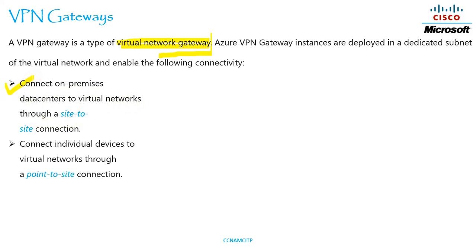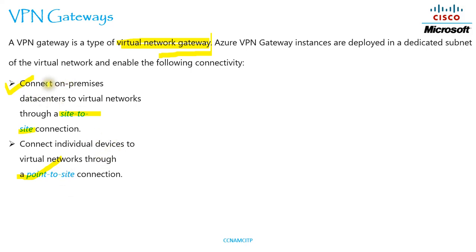The next one is connecting individual devices to a virtual network through a point-to-site connection. So here you can see: one is site-to-site and the next one is point-to-site connection. Connect on-premises data centers to virtual network is what is mentioned for site-to-site.